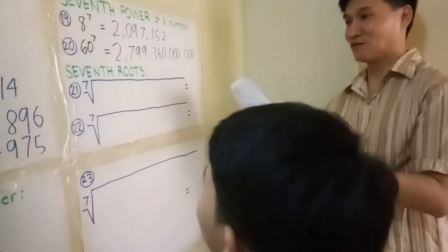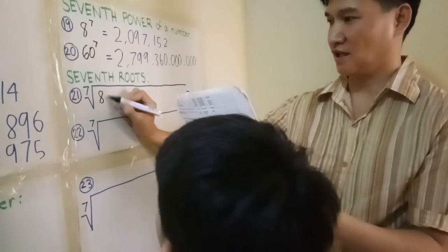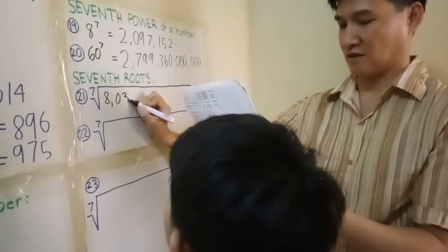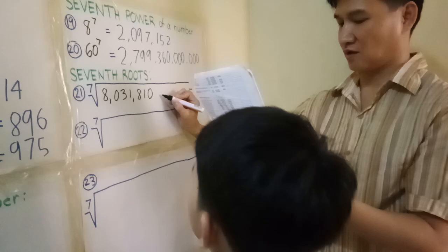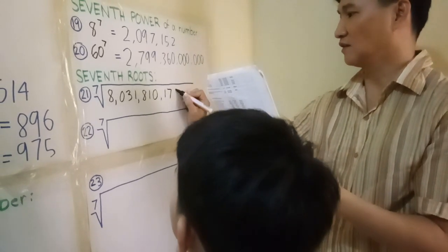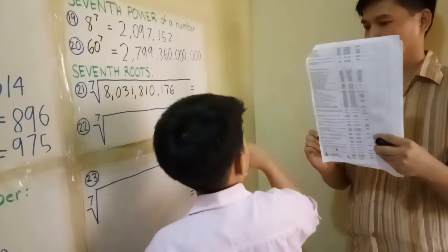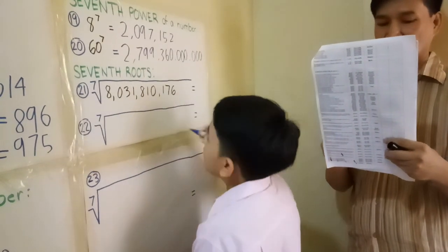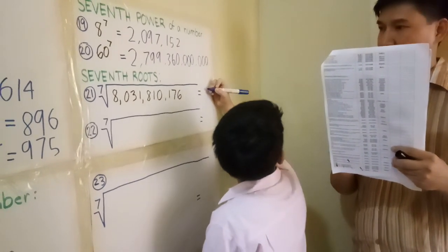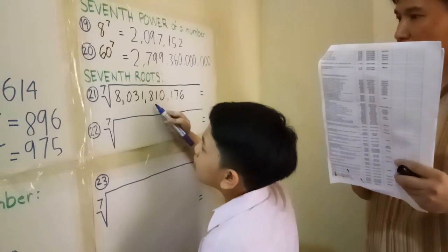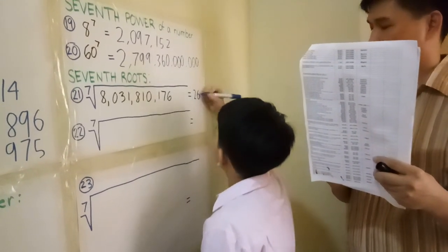We proceed to the 7th roots. What's the 7th root of 8,031,810,176? 26. Bravo, good job.